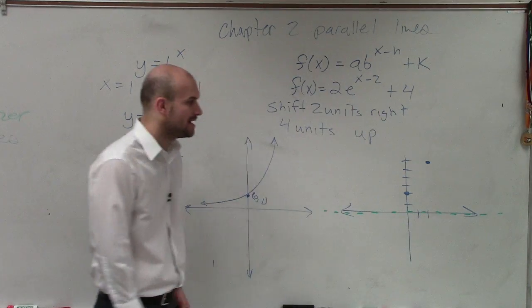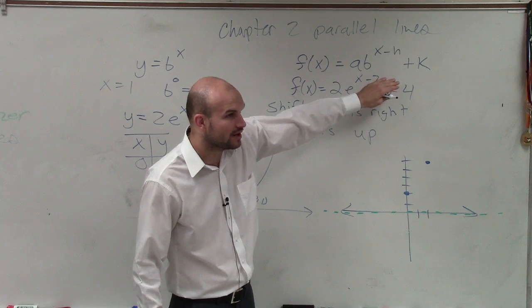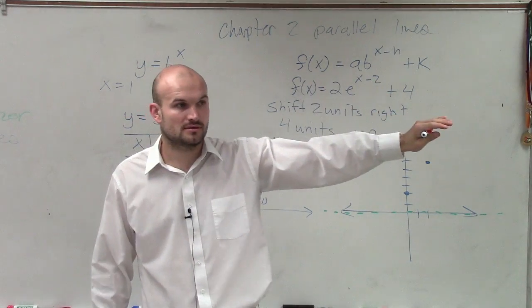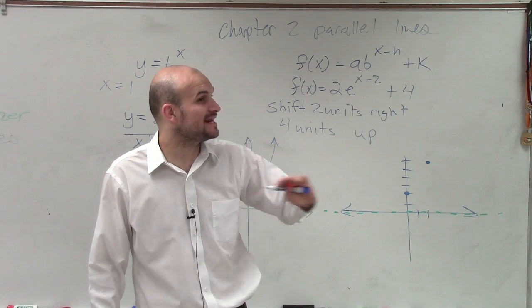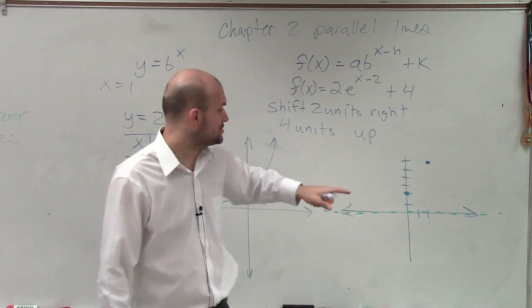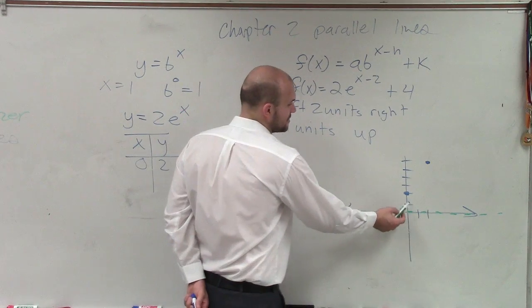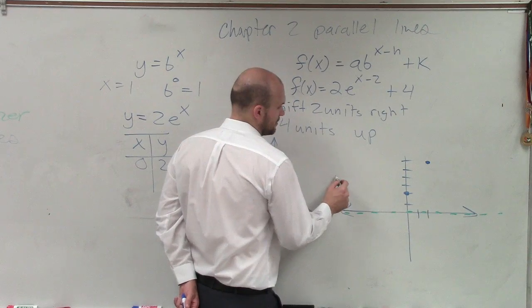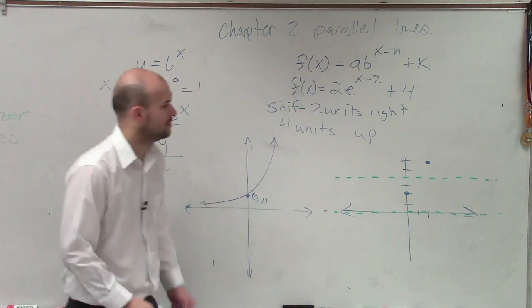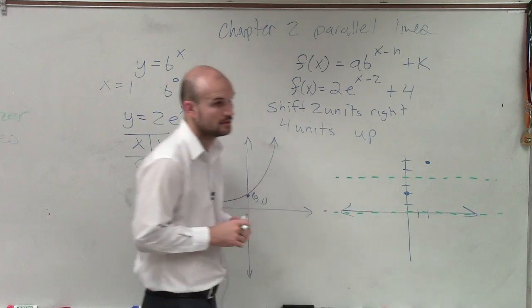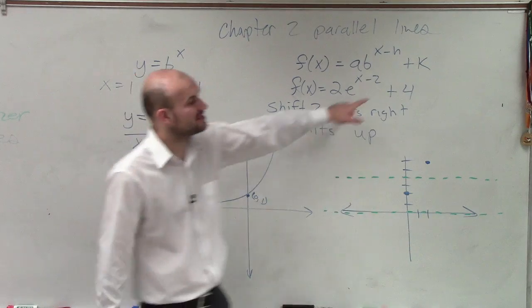You know the asymptote is at 1 comma 0. So if I shifted the graph up 4, the asymptote is now at what? Well, remember, the asymptote is not a point, though. It's a line. So if the asymptote right now is at y equals 0, now it's going to be at y equals 4. It shifts up because of the k.